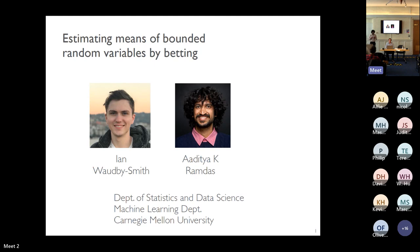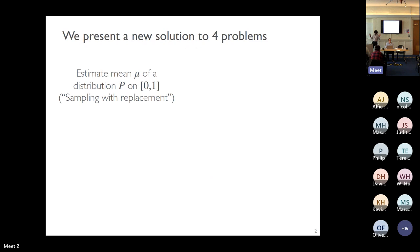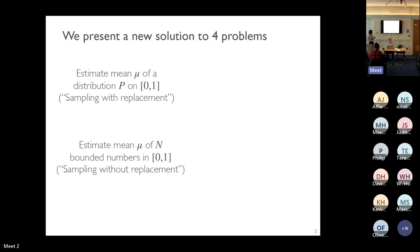The paper presents a new solution to four problems. The first is estimating the mean mu of a distribution p on [0,1] — a bounded random variable problem, referred to as sampling with replacement. The second is sampling without replacement, where you have N numbers in a bag and sample a few without replacing them, again estimating the mean mu.